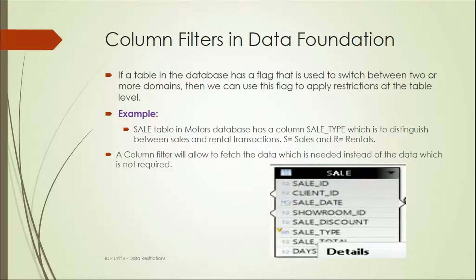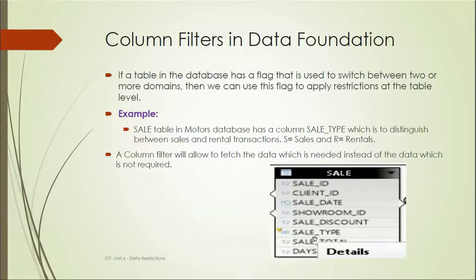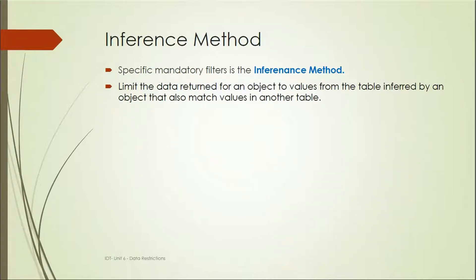Another method is column filters in the data foundation. When we design the data foundation and add tables, we can apply particular filters there. For example, for a sales table we might want only data where cell type equals S or cell type equals R. You can see the funnel icon on the table — that represents the filter applied, such as cell type equals a specific value — so that table will only return data for that particular condition.